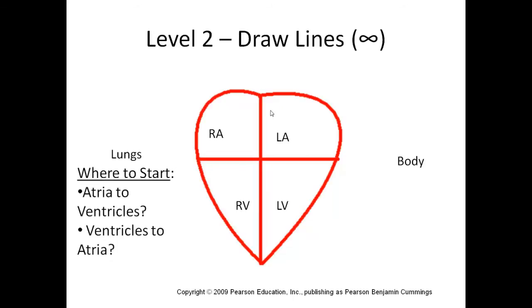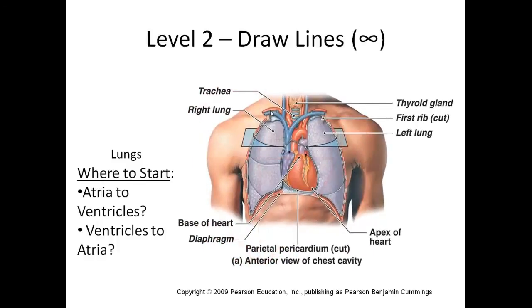We've got to decide where our first arrow is going to go. One way to start is inside the heart: is blood going to flow from atrium to ventricle, or from ventricle to atrium? The way to think about this is it's flowing from top to bottom — from atria to ventricles. Think about gravity, which generally causes the flow of blood to go from the top down to the bottom. That's just a way to think about it to get started.